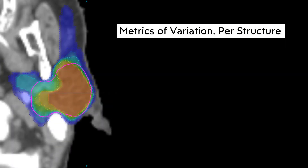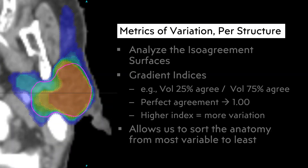We'll look per structure at metrics of variation and analyze the ISO agreement surfaces in three dimensions — think like a gradient index with a dose grid where you have a ratio of two volumes. Imagine taking the volume of 25% agreement divided by the volume of 75% agreement. As a structure gets more variable, that number gets higher; as there's more consensus and agreement, that number gets closer to one. This allows us to sort anatomy from most variable to least variable, identifying where we have the most to gain by driving out variation and discussing sources of variation.